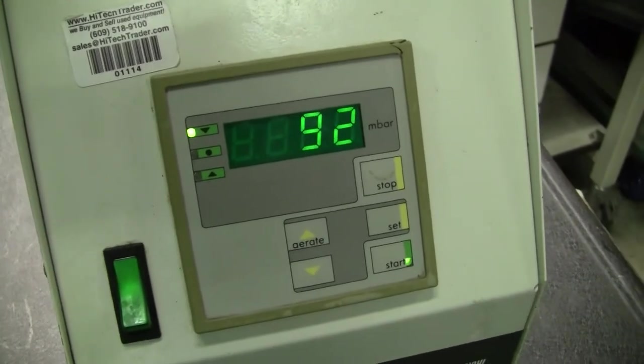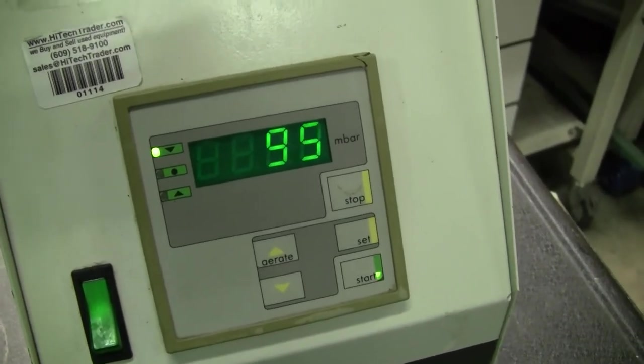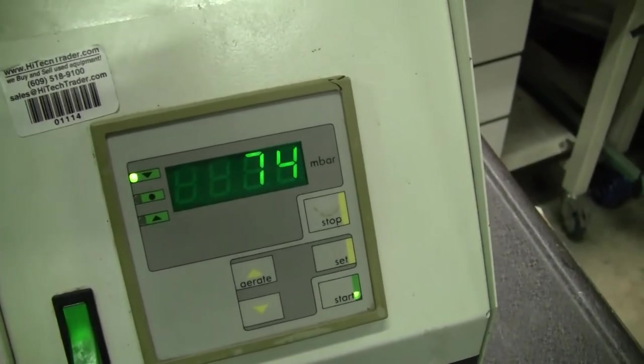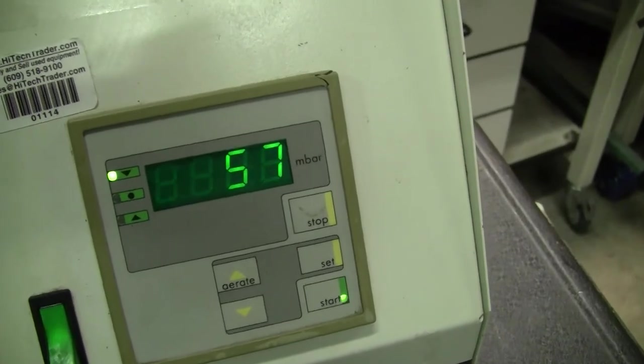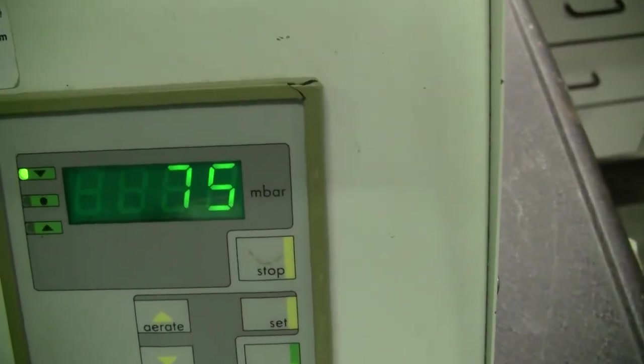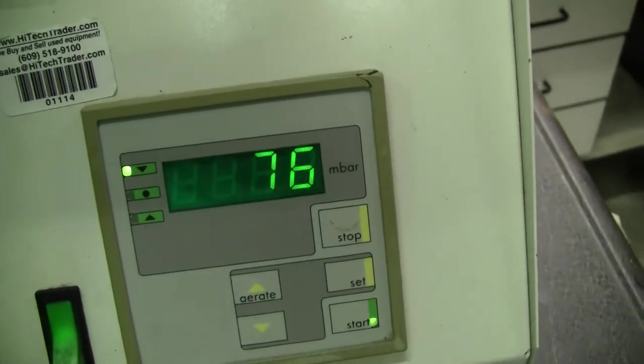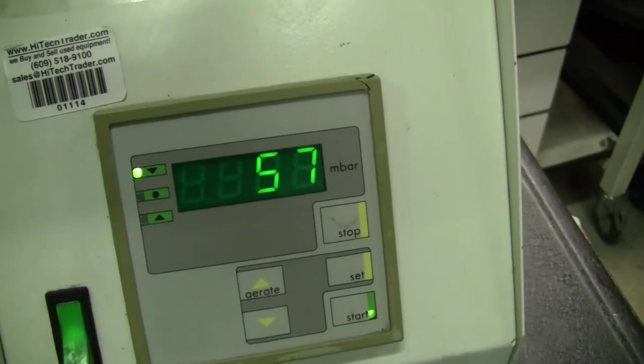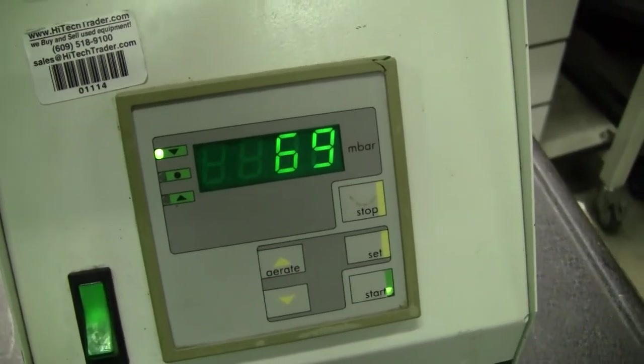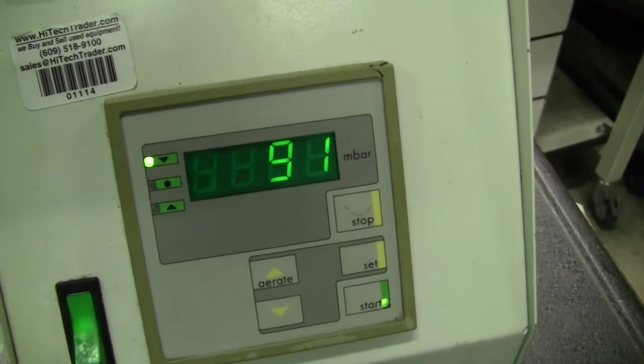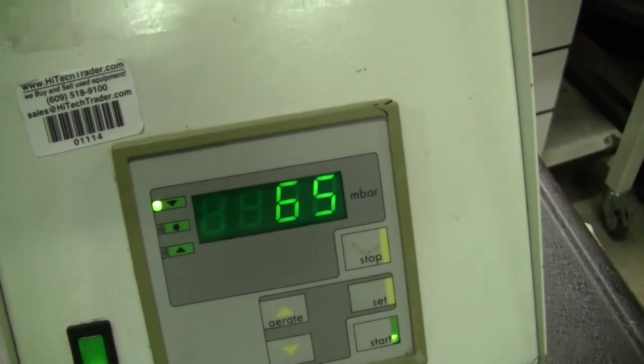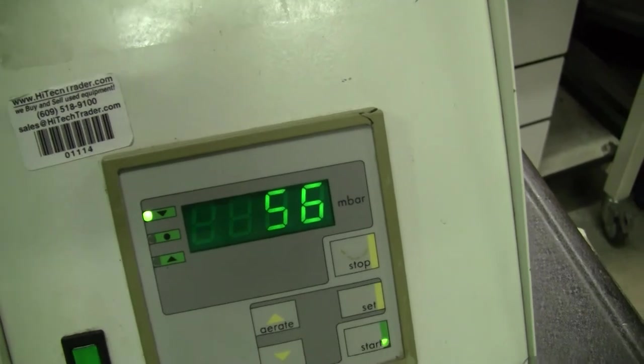Put a load on it so that we get a reading. You can see coming down and that 57 is in millibar. I've got my finger over the vacuum port in the back just creating a seal so that the equipment can pull a vacuum and the gauge inside can get a reading on what our vacuum is.